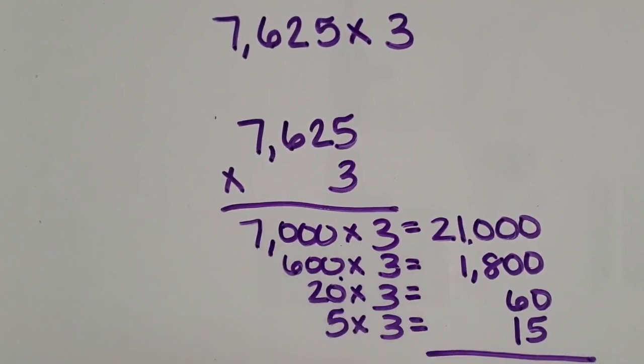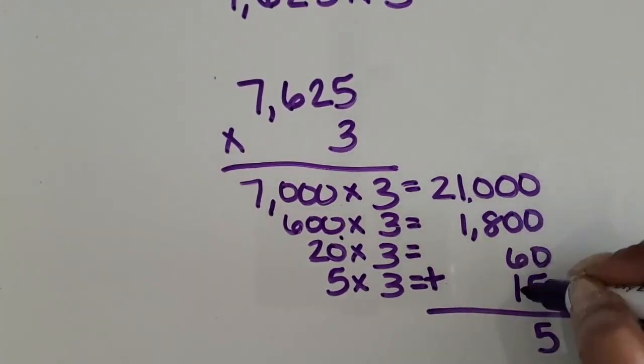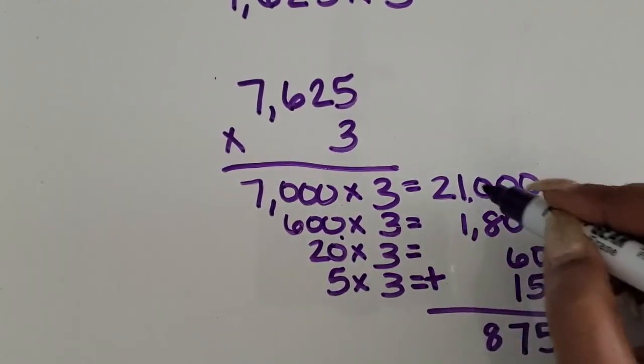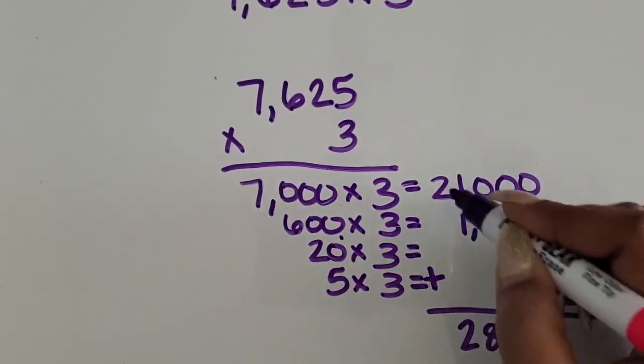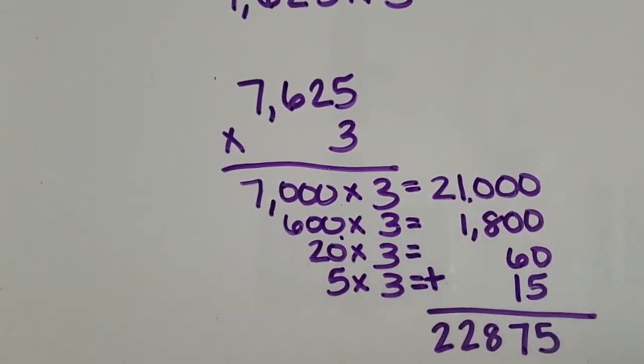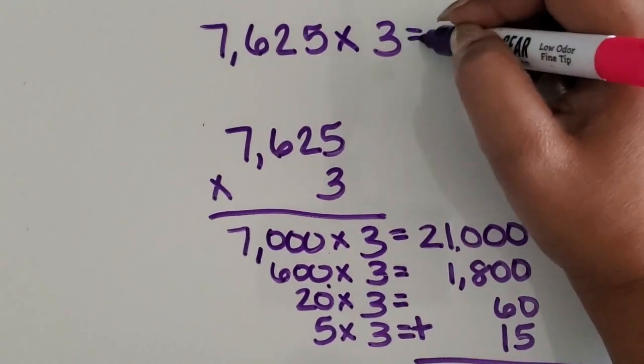Last, you want students to add the partial products up together. We know in the ones place there will be five ones, seven tens, eight hundreds, two thousands, and twenty thousand, or two ten thousands. So, the total product of 7,625 times three is 22,875.